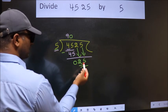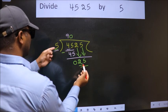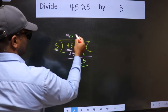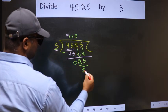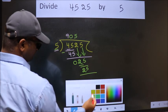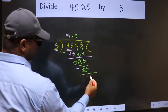So, 25. When do we get 25 in five table? 5, 5 is 25. Now we subtract. We get 0.